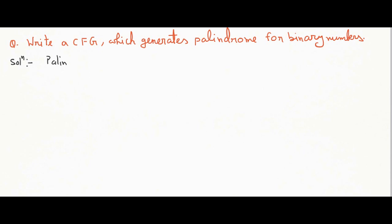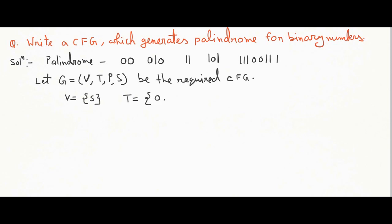Palindrome for binary numbers. Examples of palindrome are 00, 010, 11, 101, 11100111. Let G be the required CFG having variables in terminals and productions are.